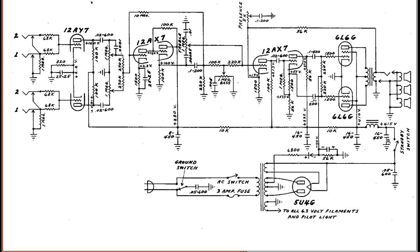The most common place for a choke to be used is in a power supply. Pulling up a schematic for the Fender Bassman: here's the power transformer and the rectifier, it goes over to the main filter capacitor — there are actually two of them in series going to ground. Here's that choke right here. The screen voltage is filtered from this choke and this capacitor, then there's an RC filter that goes to the plates of the phase inverter, and a final RC network for the pre-amplifier.